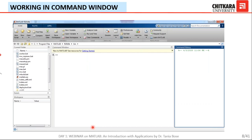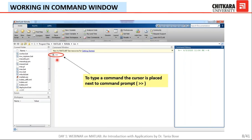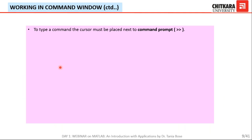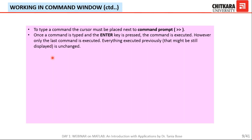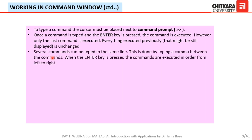When working in the command window, you always have to place your cursor after the prompt symbol — the two arrows. To type a command, the cursor is placed next to the command prompt. Once the command is typed and the enter key is pressed, the command is executed. When you write a group of commands line by line, whenever you press enter, the last command is executed. You can also write commands on the same line, but then you have to put commas between the commands.